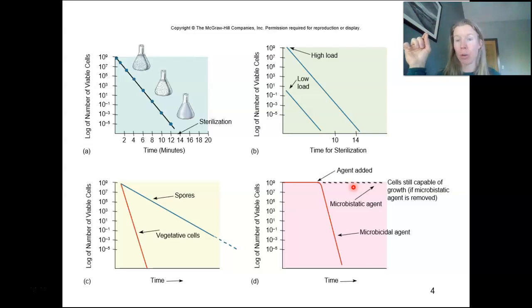So again, in the autoclave, those vegetative cells are dying really quickly. The spores are going to take much longer. We're pointing out here whether it is microbiostatic or microbiocidal. Notice with microbiostatic agents, it's not changing the number of viable cells. We're not actually killing them. It's like stasis, like stop.